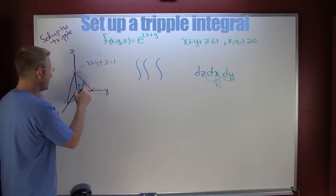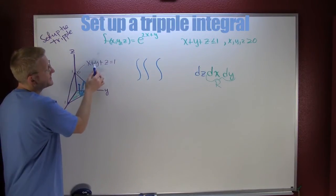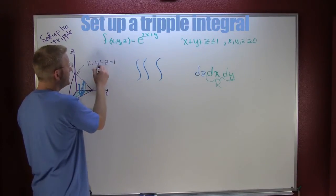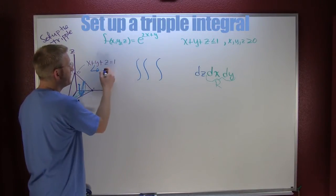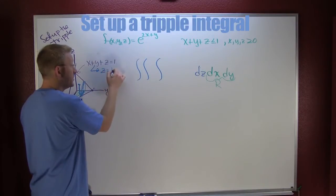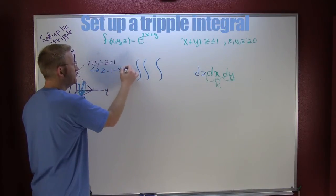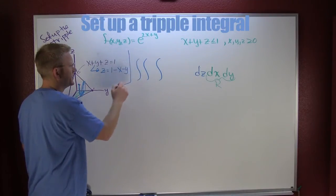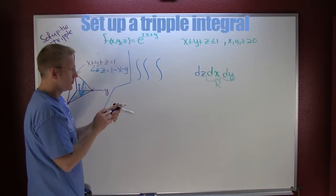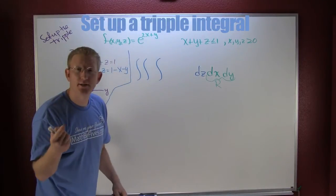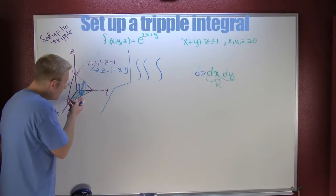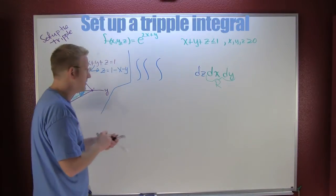So then this guy intersects that plane. I need to solve this guy for Z. So having the equation of a plane allows us to write Z as 1 minus X minus Y. That's that guy, this is all over on the side. Great.